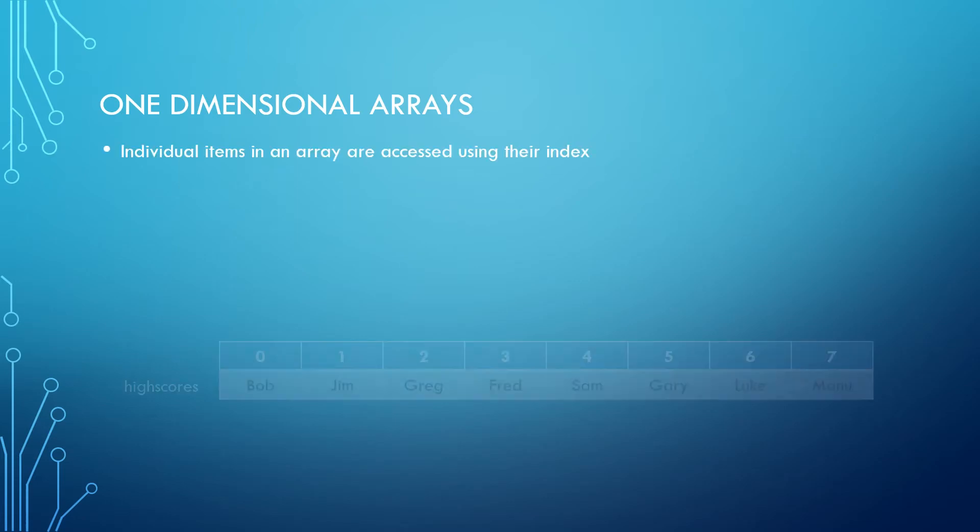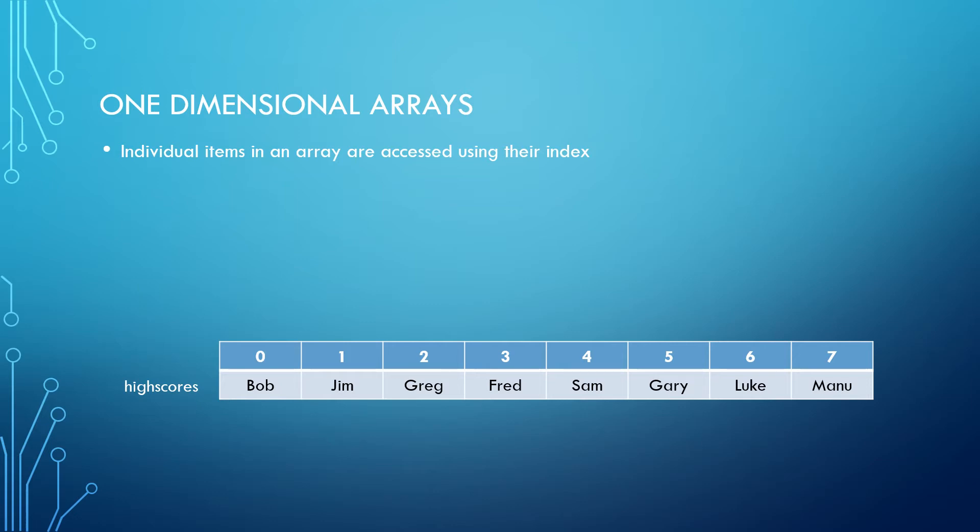Individual items in an array are accessed using their index. Their index just means their numerical position within the array. In pseudocode and in many languages like Python, array indexing starts at zero. This can be seen in the example below where the indexes of the items in the array have been placed above them.